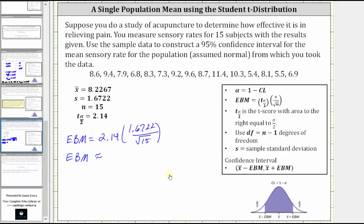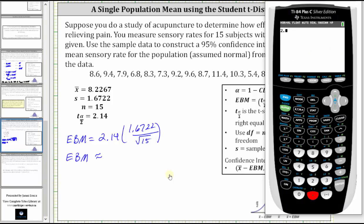Now we'll go back to the calculator, 2.14 times 1.6722 divided by the square root of 15. To four decimal places, we have approximately 0.9240.